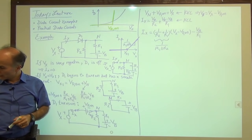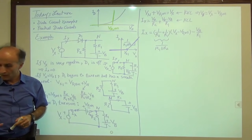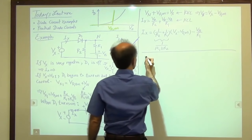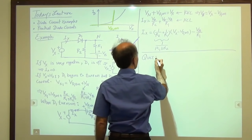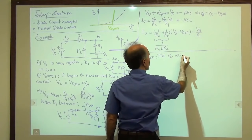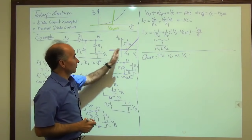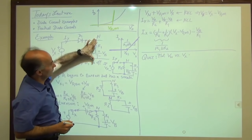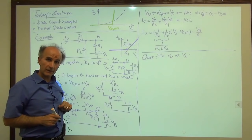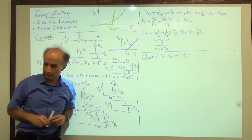Here is the quiz of the day: plot Vn versus Vx in that example. As Vx goes from minus infinity to plus infinity, we would like to plot Vn — the voltage at node N — as a function of Vx. I will give you 90 seconds to work on that based on all our findings.